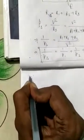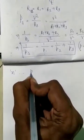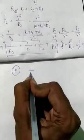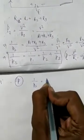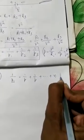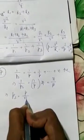Now, if N bulbs are connected with the same power P, then we can write 1 by Ps is equal to 1 by P plus 1 by P, N times. This implies 1 by Ps is equal to N by P, or Ps is equal to P by N.